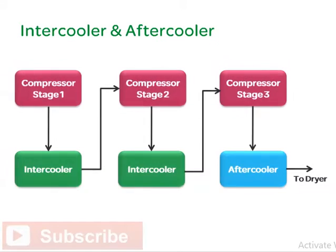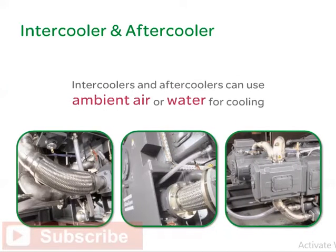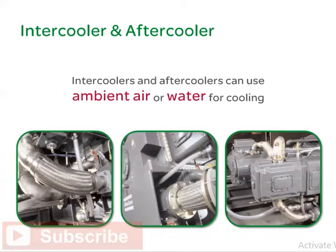In a multi-stage compressor, there will typically be an intercooler between each stage. This is a heat exchanger that removes the heat of compression before the air enters the next stage. As the air is cooled, the airstream may fall to its pressure dew point, and any additional cooling causes water vapor to condense out. Condensate is separated from the compressed air and drained out of the system. An aftercooler cools air leaving the compressor. Sometimes it is an integral part of the compressor package, but sometimes it is a separate heat exchanger. Intercoolers and aftercoolers can use ambient air or water for cooling.